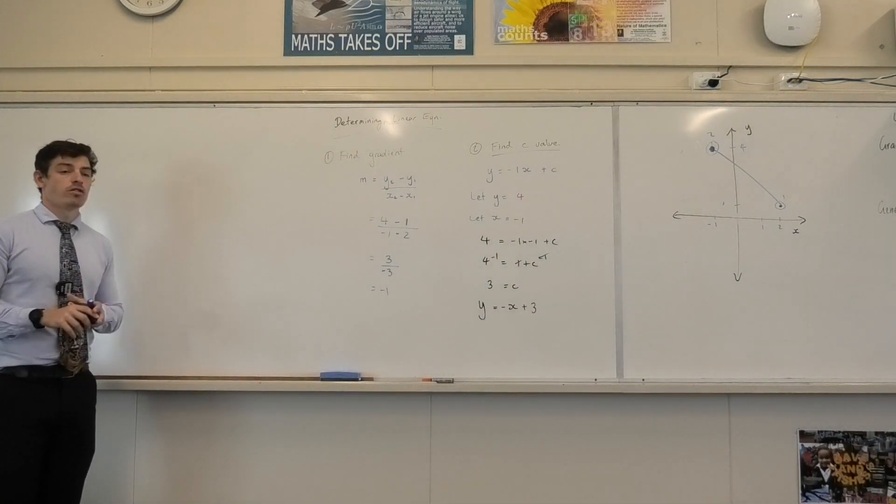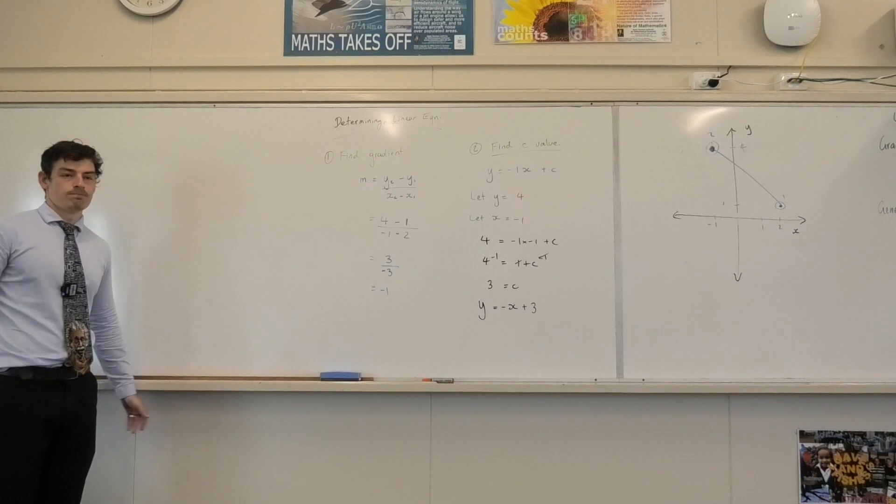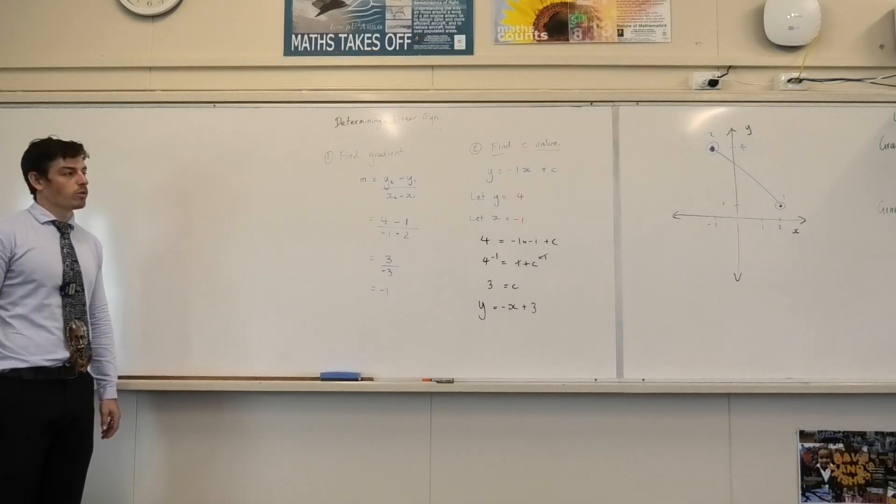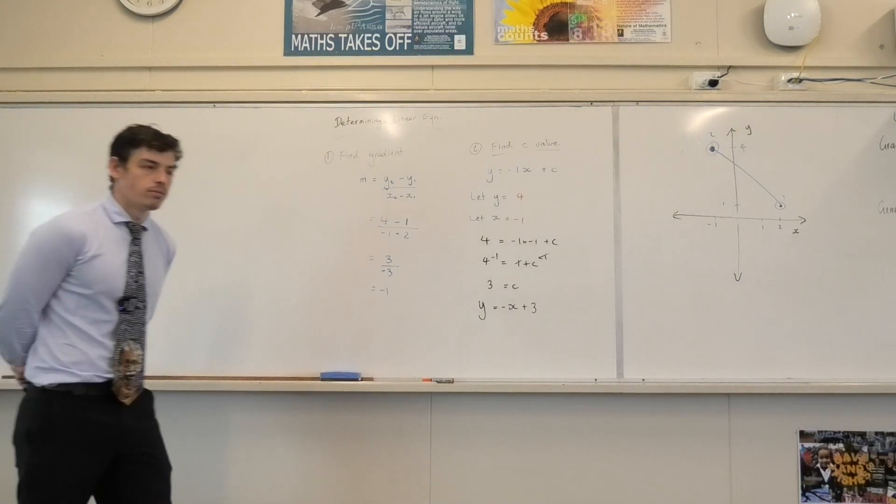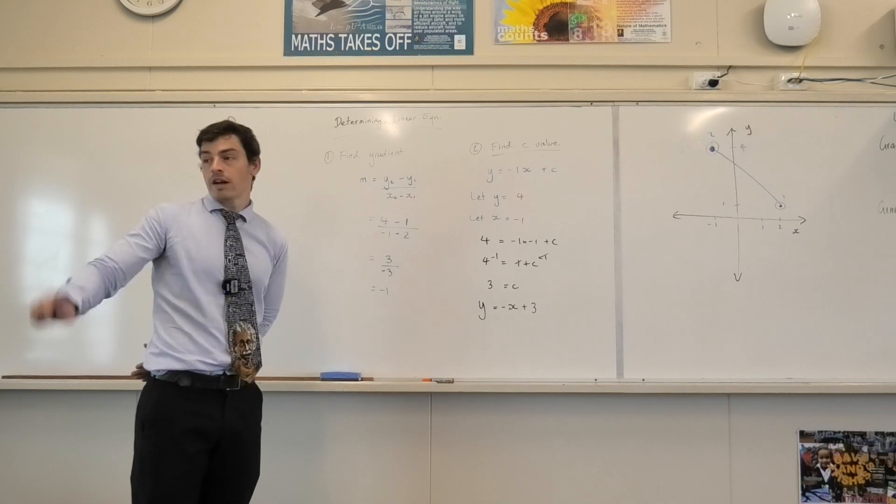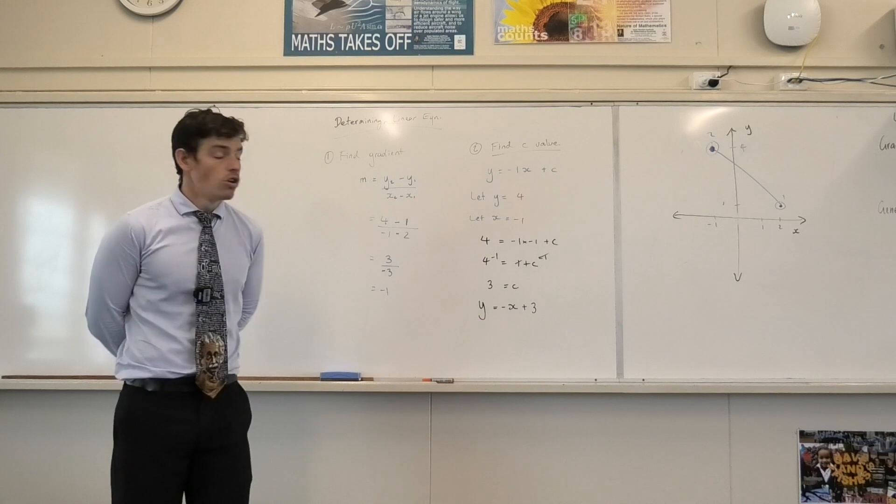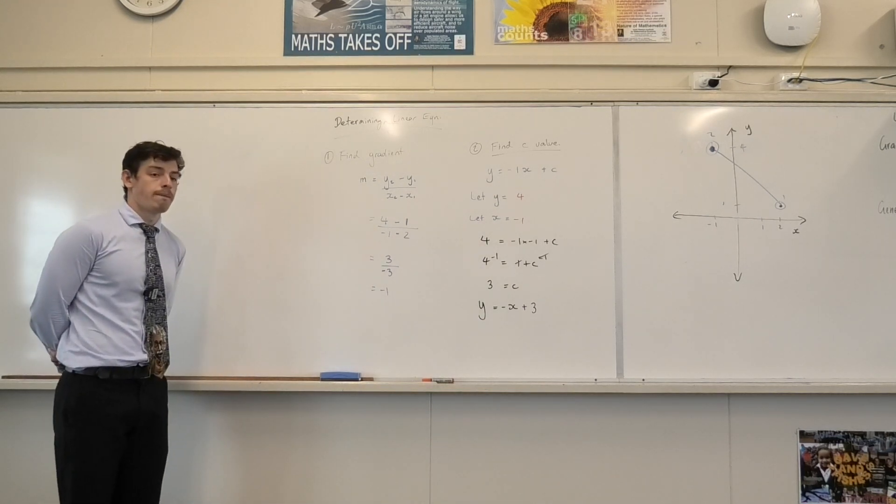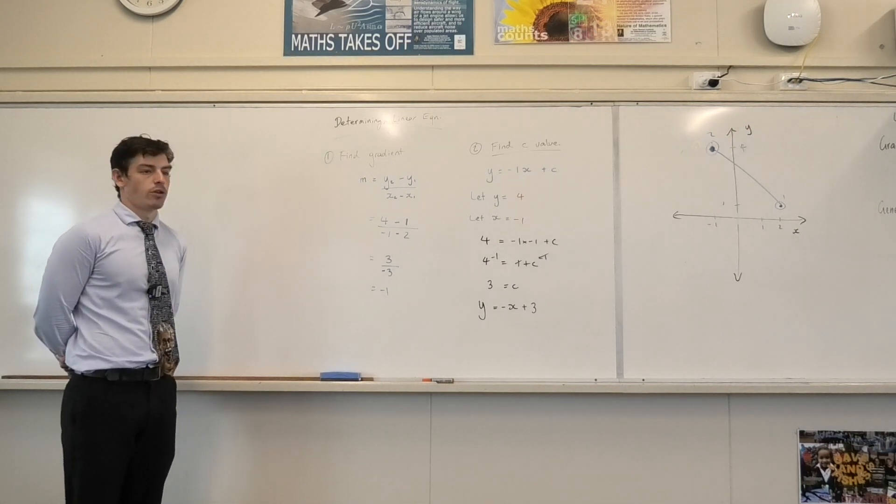So how do I get that for general form? What's the difference between general form and gradient form? Harry? That's more than two variables. Yeah, there's more than two variables. What have I got on one side of the equation? A zero. A zero. How do I do that here?